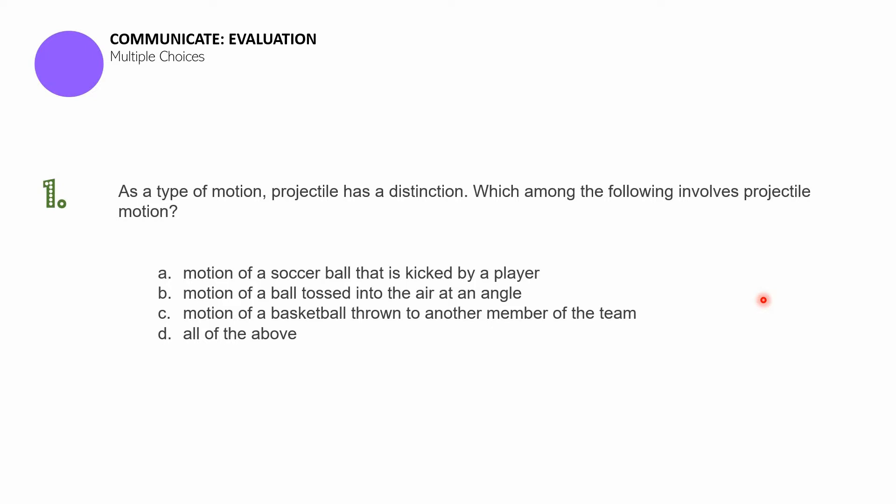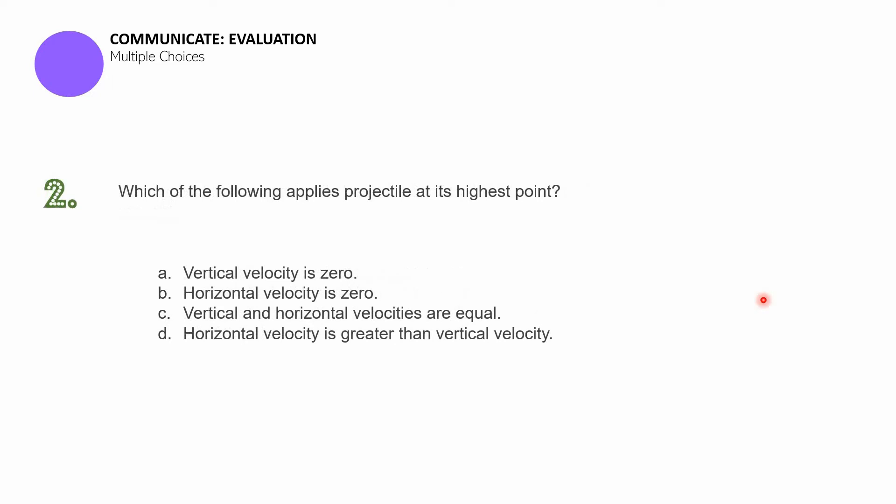If you're ready to move to the next item, let's move to question number two. Which of the following applies to projectile at its highest point? A, vertical velocity is zero. B, horizontal velocity is zero. C, vertical and horizontal velocities are equal. And then D, horizontal velocity is greater than vertical velocity.